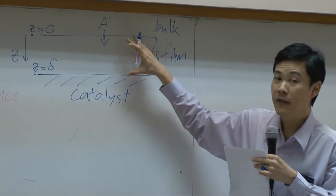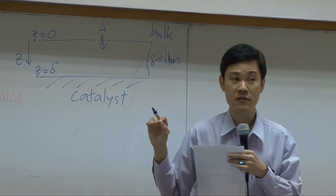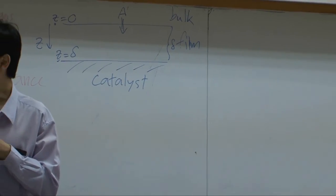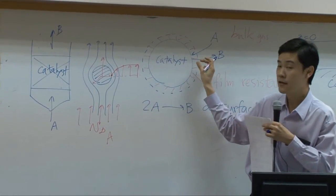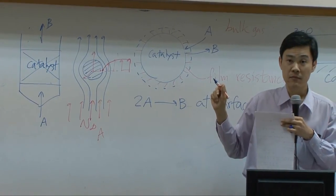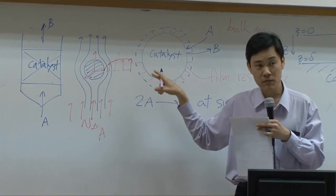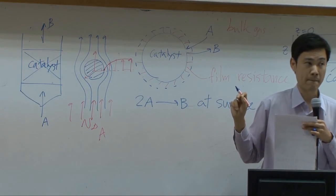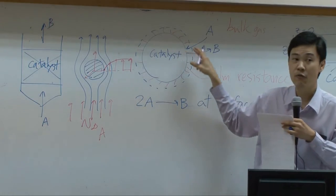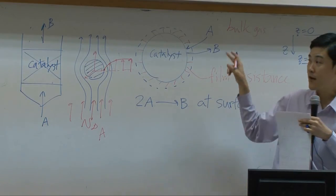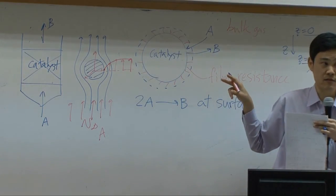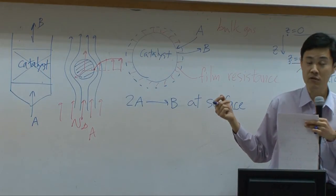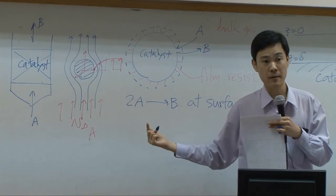By the way, the thickness of the film here, delta, depends on several features or several factors. The most important factors would be velocity of the fluid itself. If the velocity is high, then the thickness of this film resistance becomes very thin, because high velocity makes the concentration out here uniform. So the thickness of the film resistance is inversely proportional to incoming velocity. And by the name itself, it's called resistance. If you want the flux of A to move toward the catalyst in high flux, then the thickness of the film resistance is supposed to be thin. In other words, if you want to enhance diffusion, the first thing that you like to do would be increase the flow rate.